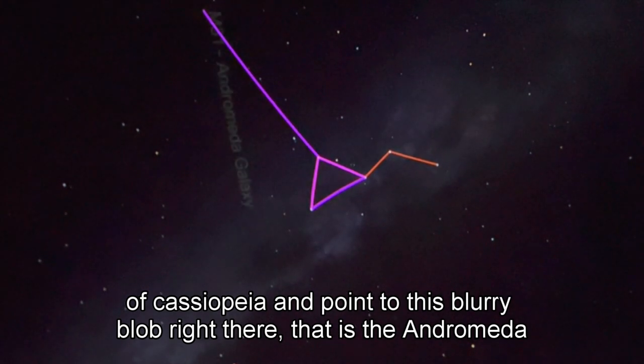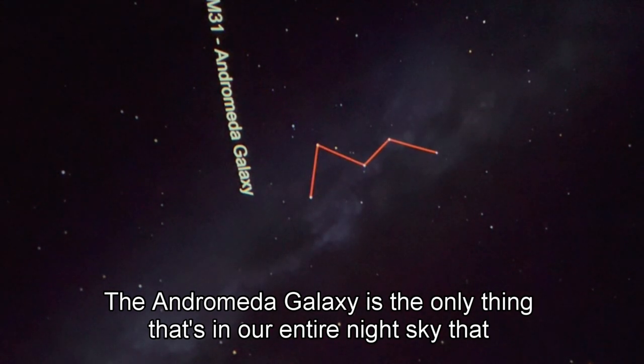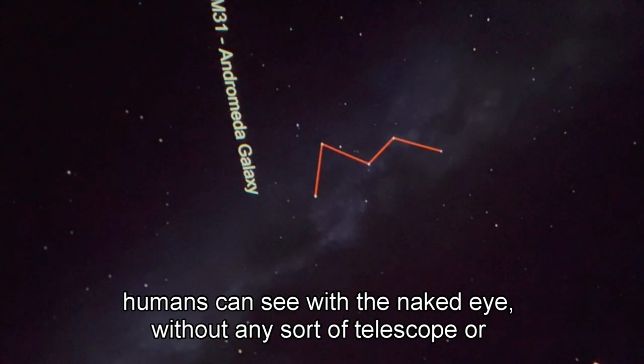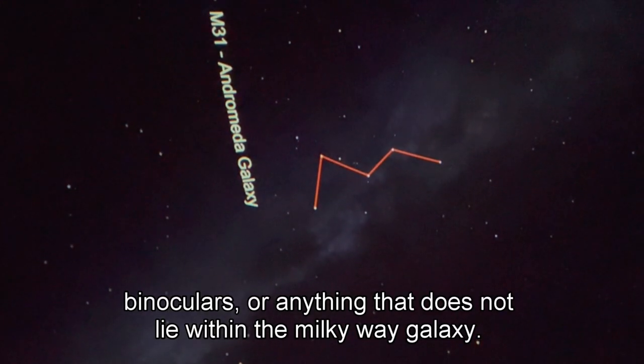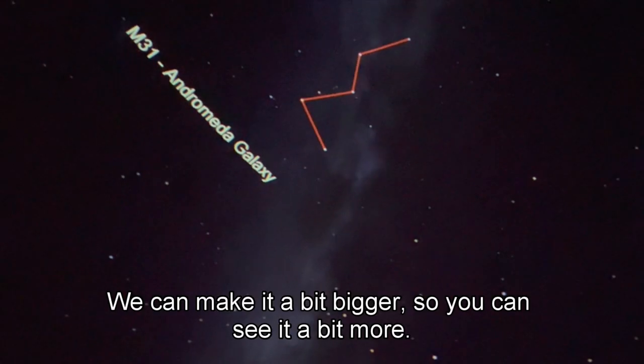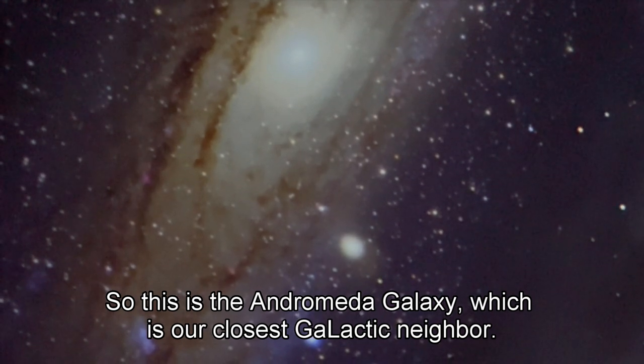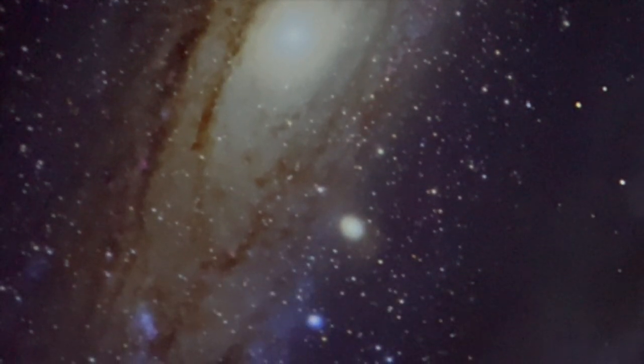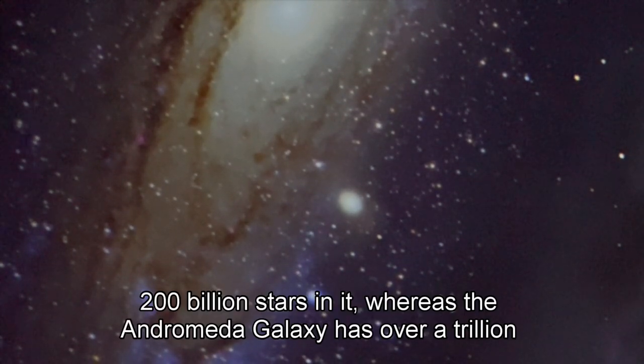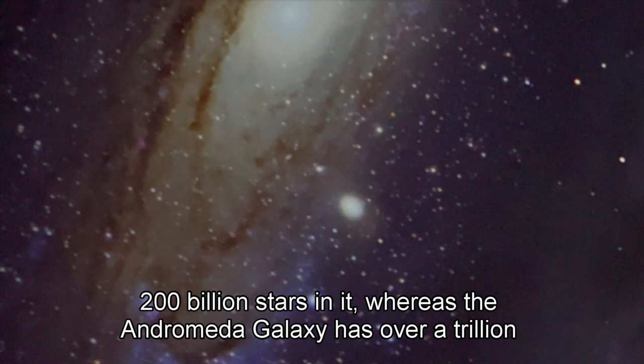The Andromeda galaxy is the only thing in our entire night sky that humans can see with the naked eye without any sort of telescope or binoculars that does not lie within the Milky Way galaxy. It's the furthest away object that you're able to see. The Andromeda galaxy is our closest galactic neighbor. The Andromeda galaxy is much bigger than the Milky Way galaxy. The Milky Way has about 200 billion stars in it, whereas the Andromeda galaxy has over a trillion stars in it.